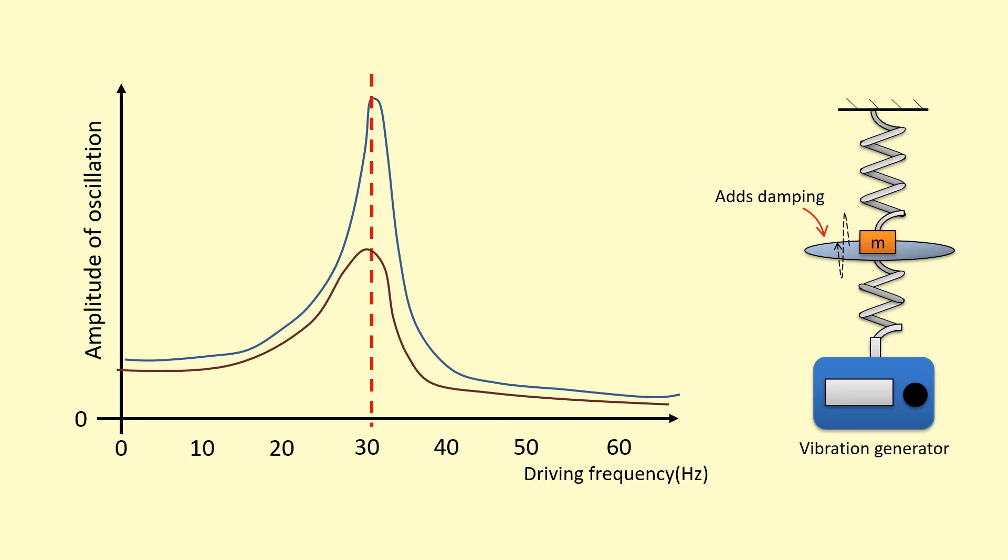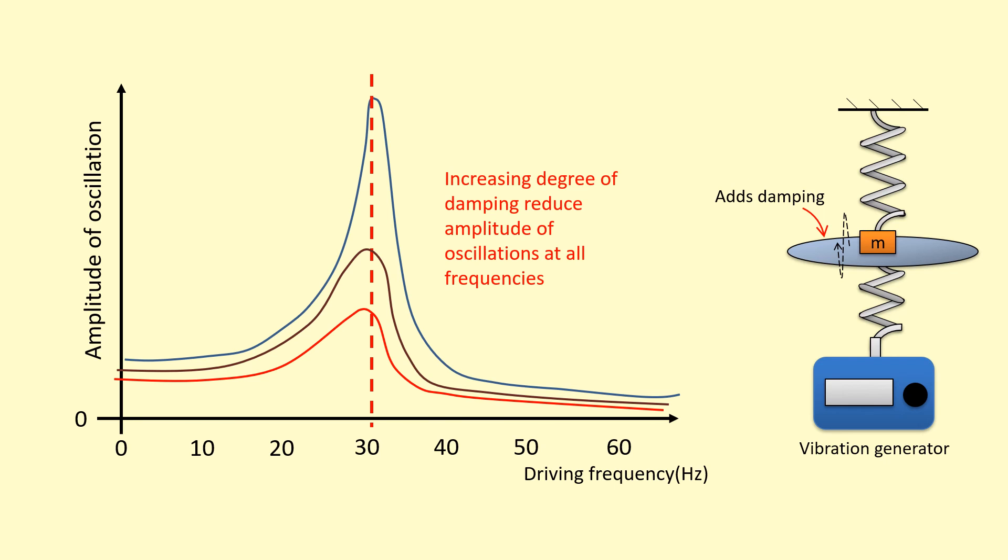If I plot that, I get a graph like this. So as you can see, at every single point, the amplitude is smaller and the resonance is not as noticeable. And if I increase the disk size even more to get even more damping, a larger resistive force, and plot this graph again, you can see the amplitude decreases at every frequency and the peak is more broad, so the effect of resonance is less noticeable.